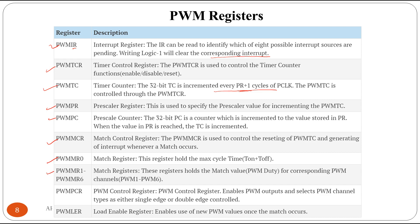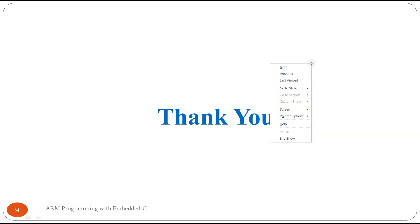We have PWM match registers: MR1 through MR6, corresponding to the six PWM channels available in the LPC2148. We also have PWM PCR, the PWM control register, and PWM LER, the load enable register. These are the registers used to configure the PWM signal in the LPC2148. This has been a basic introductory overview of the PWM peripheral available in the LPC2148 microcontroller. Thank you.